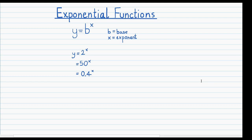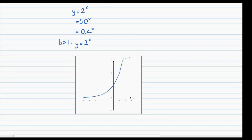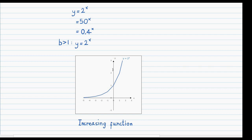The first case is for values of b greater than 1, such as 2. For values of b greater than 1, as you increase the value of x, the value of y also increases — so this is an increasing function. It qualifies as a function because a vertical line would always cut the graph at only one point. Another interesting thing about the graph is that the y value will never reach 0, so it has the x-axis as a horizontal asymptote.